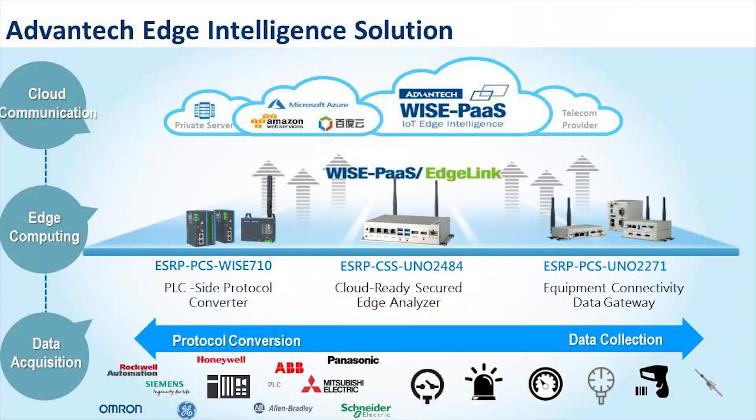The first step for the intelligent edge is helping to collect data from diverse devices. The second is edge to cloud — enabling cloud communication is essential work for the intelligent edge. We are supporting Advantech WisePass and, of course, other third-party clouds like Microsoft Azure, Amazon AWS, as well as the OPC UA server, or clouds from telecom providers like Ericsson.